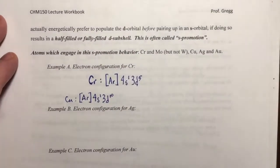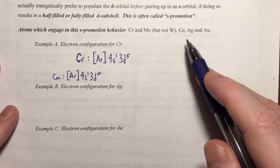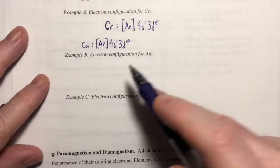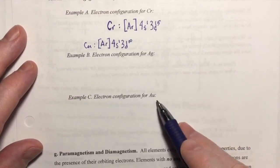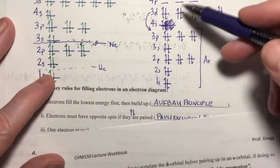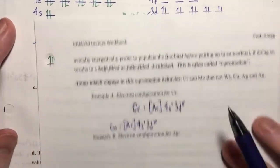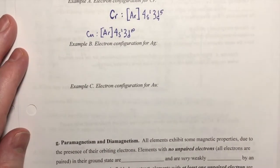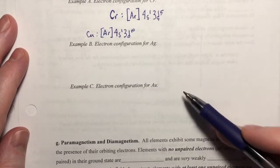Now I've got a couple of practice problems for you. With this in mind, and recognizing that silver and gold engage in S-promotion, I would like for you to write the electron configuration for silver and for gold. See if you can do it without having to draw a diagram. Pause the video, answer those two questions, and when you're finished resume and I will complete them.